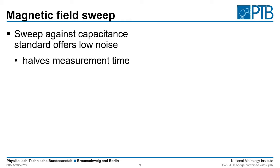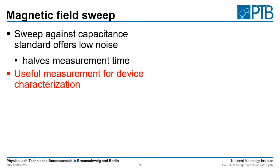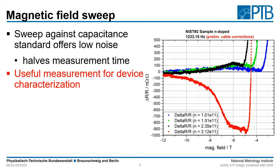One very important measurement for AC quantum hall devices is the sweep of the magnetic field. We performed these measurements, but against the regular procedure we did not measure against a room temperature resistor or a thermostat resistor but against a 10 nF capacitor. This has the great advantage of low noise and halves our measurement time, and it is a useful measurement to characterize devices. In this plot I show the relative deviation from the quantum hall DC value over the magnetic field for four different carrier density settings of the NIST sample.